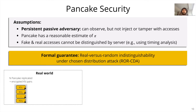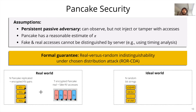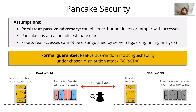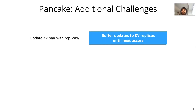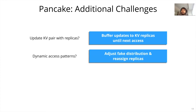Without going into too much detail: in the real world, the adversary is given Pancake's replicated and encrypted version of the key-value store, along with a transcript of T queries comprising both real and fake accesses. In the ideal world, the adversary is given a key-value store comprising random bit strings, along with a transcript of T uniform access requests. We show that both worlds are indistinguishable to an adversary. We also resolve additional challenges — for instance, updates to key-value pairs with multiple replicas are buffered until the next access to ensure security, and on changing access distributions, we dynamically adjust the fake access distribution and reassign replicas.